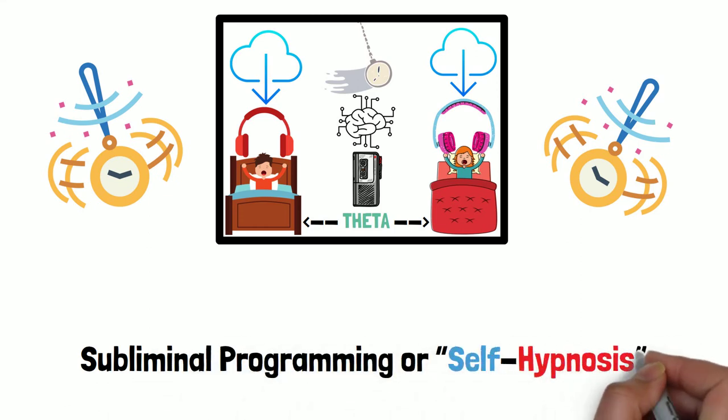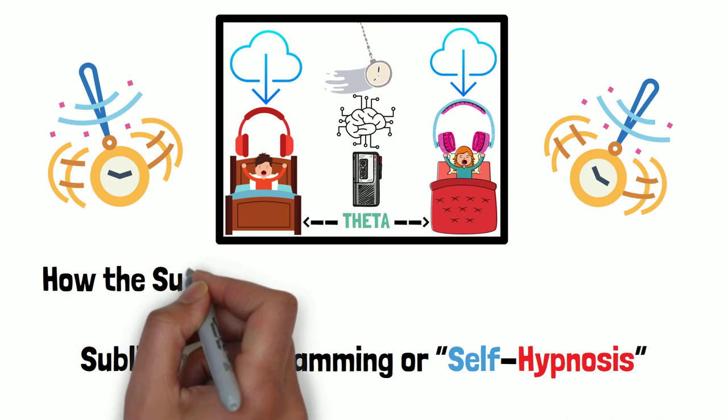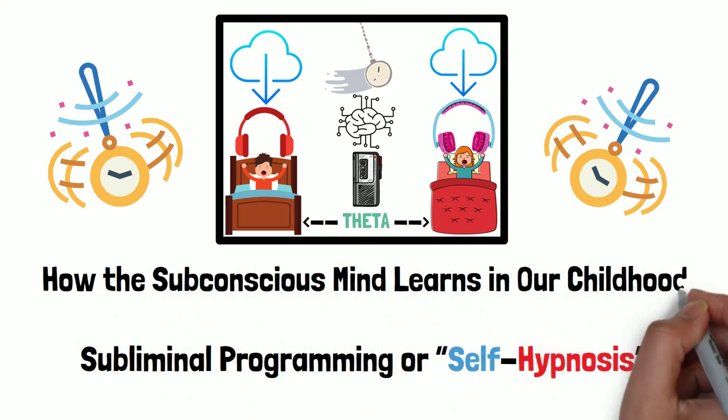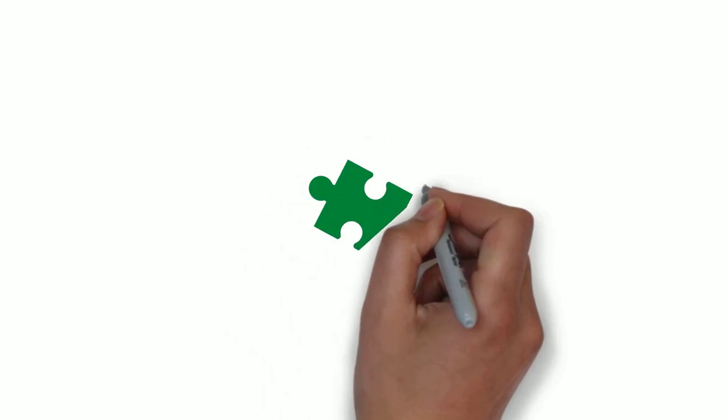Hypnosis is indeed the first way the subconscious mind learns. But after you pass six or seven years of age, the subconscious mind learns in a different way. And that is called habituation.